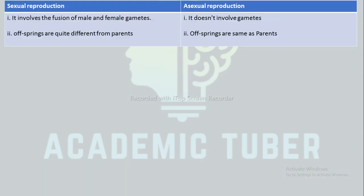The next difference is between sexual and asexual reproduction. In sexual reproduction, there is involvement of male and female gametes, whereas in asexual reproduction there is no involvement of gametes. In sexual reproduction, offspring are quite different from parents, whereas in asexual reproduction offspring are identical to parents.